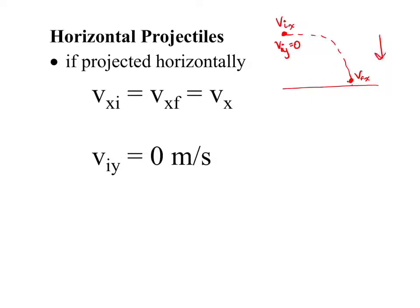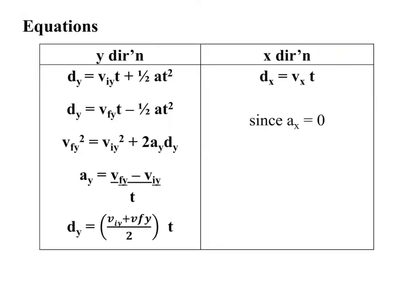There's only acceleration downwards, which is acceleration due to gravity: 9.81 meters per second squared. In every single projectile, the X direction has no acceleration; the Y direction does. That means all of our kinematic equations that work with acceleration can be used in the Y direction. The only equation we cannot use in Y is V equals D over T. In the X direction, since there's no acceleration, we can only use one equation: V equals D over T.